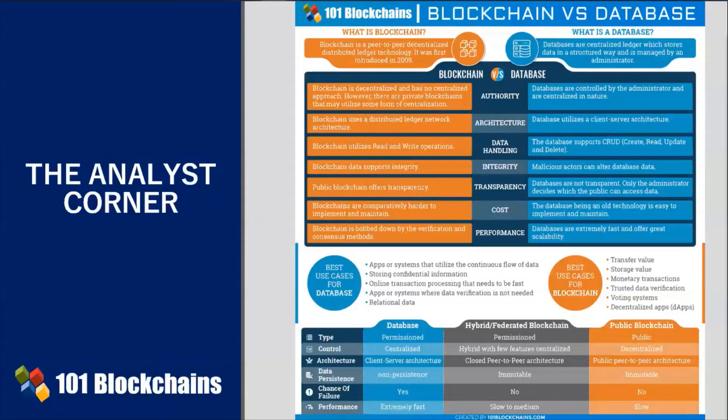Blockchain is considerably slower when compared to a database. To execute a transaction, blockchain performs all the activities of a traditional database, plus signature verification — blockchain transactions are signed using cryptographic algorithms — plus consensus algorithms to validate transactions, and also redundancy, as each transaction's information is stored and verified by each node.